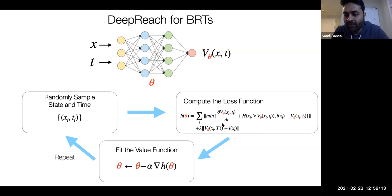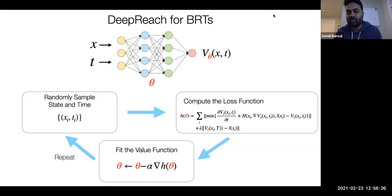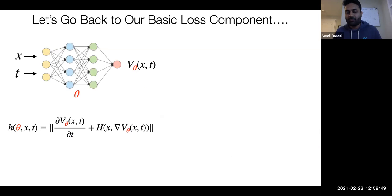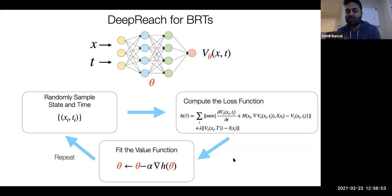We don't have to restrict ourselves to the backward reachable set. We can use the variational inequality instead of just the PDE as our loss function, because for the backward reachable tube we need to satisfy not just a PDE but a variational inequality. With this new loss function, we can obtain the backward reachable tube using DeepReach. We can go a step further and use the backward variational inequality for the reach-avoid tube, and thereby obtain the reach-avoid set using DeepReach as well.